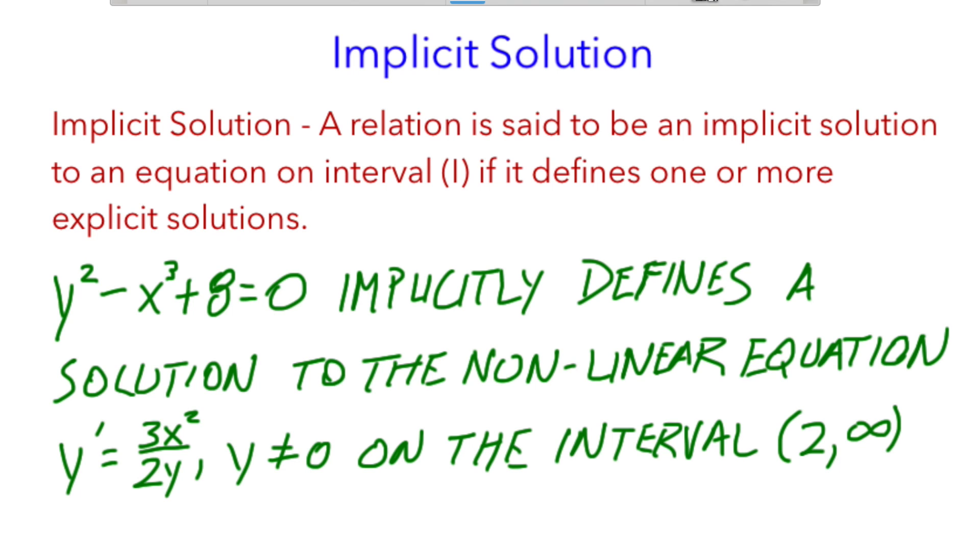y squared minus x cubed plus 8 equals 0 implicitly defines a solution to the nonlinear equation y prime equals 3x squared over 2y. Y cannot equal 0, so only on the interval 2 to infinity.